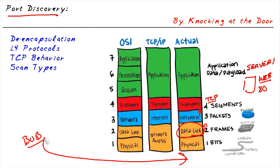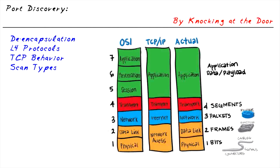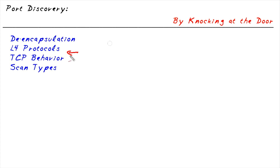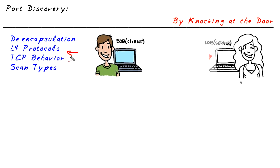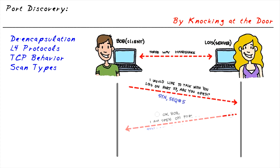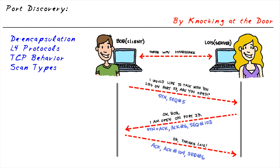If we send a request to TCP port 80, the server will respond in predictable ways back to Bob, and that's how Bob's computer can know that TCP port 80 is open and available on this web server. Because these protocols operate in predictable ways, we can use tools that leverage those basic characteristics. This is an example of a traditional three-way handshake — the expected behavior when two devices are setting up a TCP session.